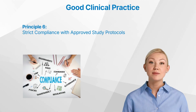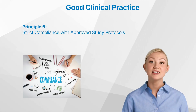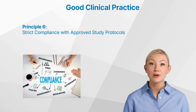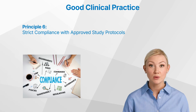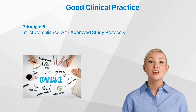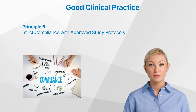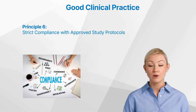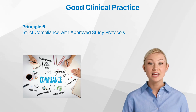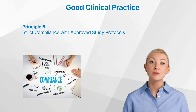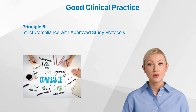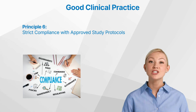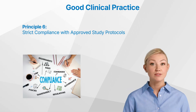Principle 6: strict compliance with approved study protocols. Adherence to the study protocol is crucial for maintaining the integrity of the trial. The protocol must receive prior approval from an institutional review board or independent ethics committee to ensure that the trial is conducted ethically and scientifically. Researchers are responsible for ensuring that all trial activities align with the approved protocol, including participant recruitment, data collection, and analysis. Deviations from the protocol should be minimized and documented, with appropriate corrective actions taken. Compliance ensures that the trial results are credible and can withstand regulatory scrutiny.